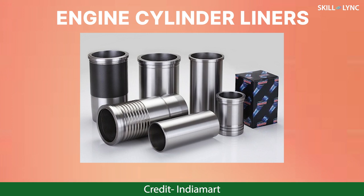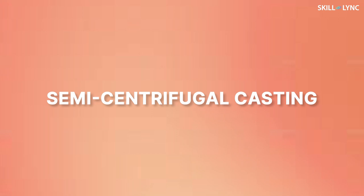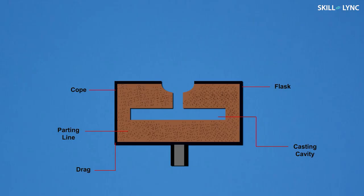Now, let's talk about semi-centrifugal casting. This process is used to produce solid castings, and to produce hollow shapes, cores are required. In this process, a dispensable sand mold is usually employed.